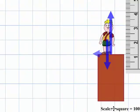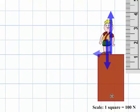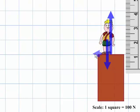Notice again the scale: 1 square equals 100 newtons. So this vector down at 200 newtons, this vector up at 300 newtons, and this vector to the left at 50 newtons.